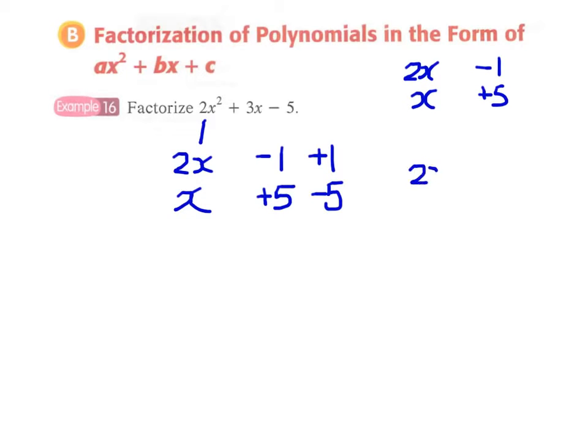But then we can immediately realize that the -1 and +5 can be interchanged. The positions can be interchanged to make up another pair of factors, and now we can see that